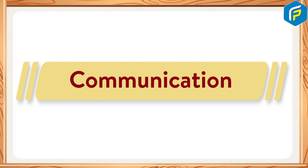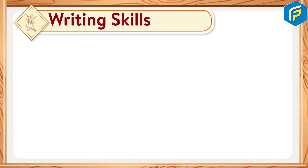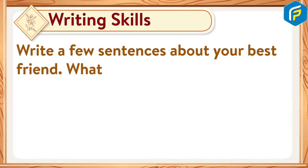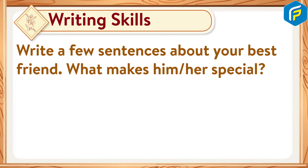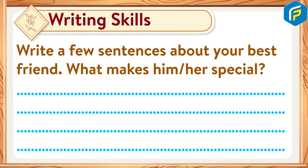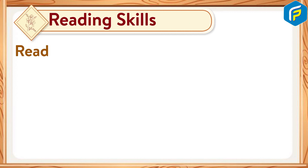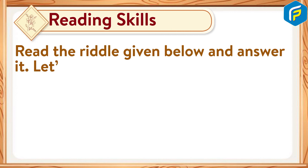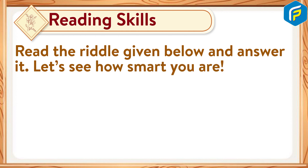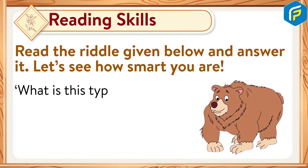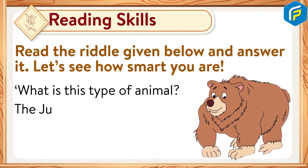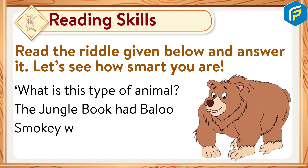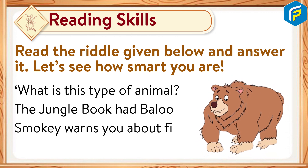Communication — Writing skills: Write a few sentences about your best friend. What makes him or her special? Reading skills: Read the riddle given below and answer it. Let's see how smart you are. What type of animal: the Jungle Book had Baloo, Smokey warns you about fires...